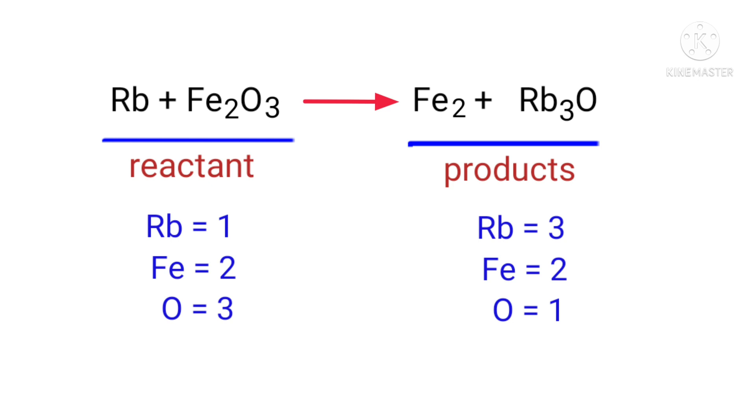In this equation, we need to balance the oxygen atoms first. To do this, we need to put a coefficient of 3 in front of Rb₃O.